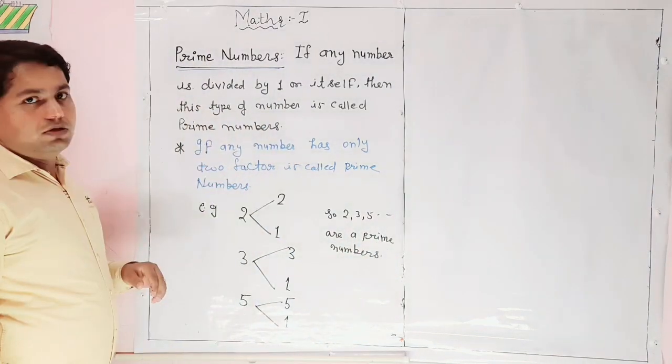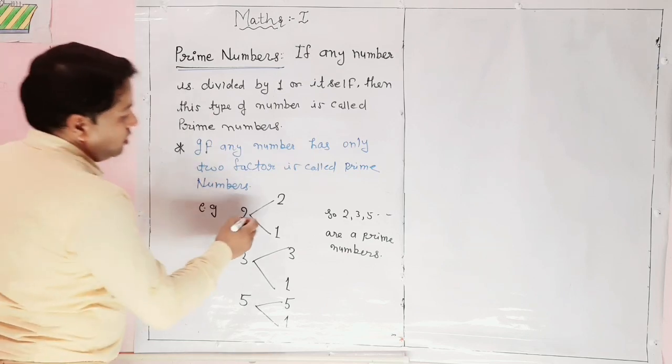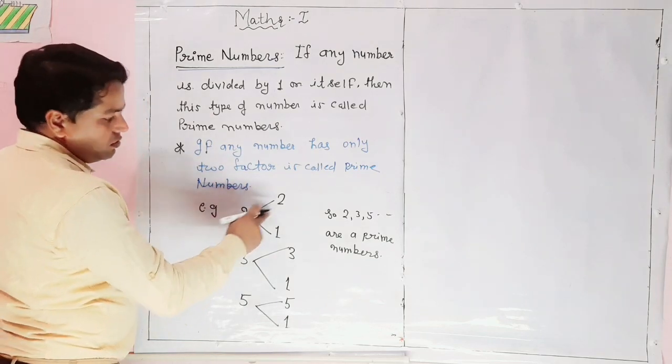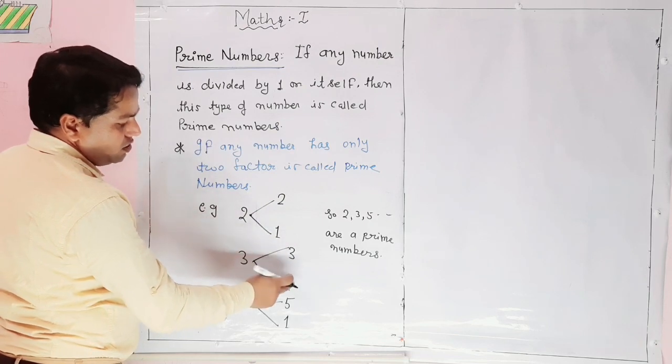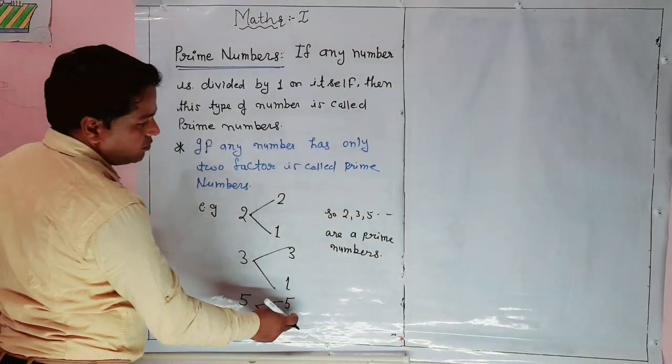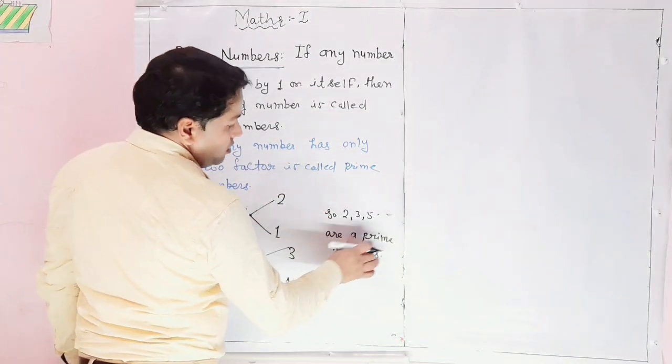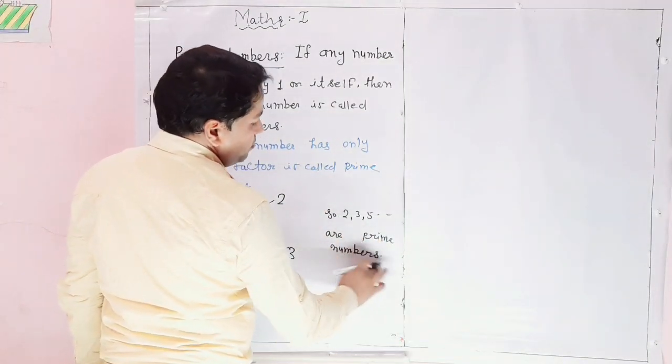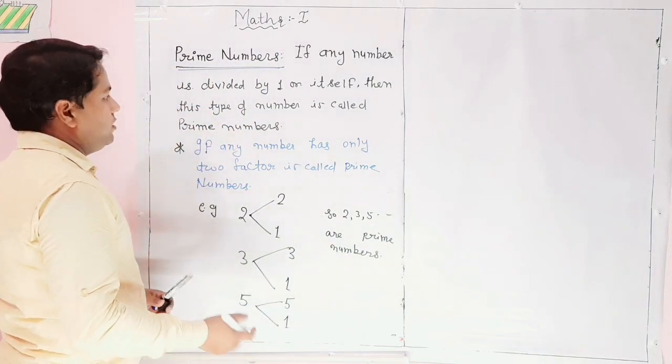Now, you can see that 2 has 2 factors: 2 and 1. 3 has how many factors? 2: 3 and 1. 5 has how many factors? 5 and 1. So 2, 3, 5 etc. are prime numbers. Similarly, 7 can be, 11 can be. Okay?